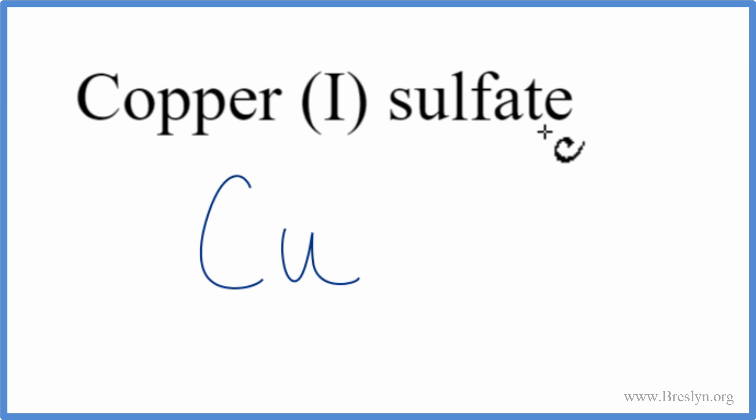For sulfate, it ends in A-T-E, so you're not going to find it on the periodic table. This is a polyatomic ion, so we can look it up on a table of common polyatomic ions, or you could have it memorized, and this is a good one to memorize. Sulfate is SO4, and the charge is 2 minus.